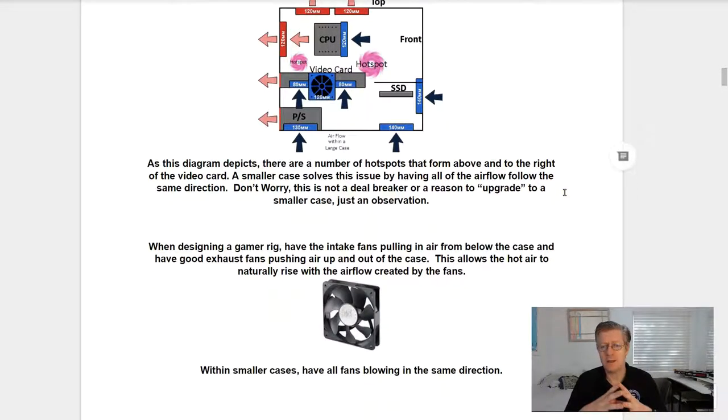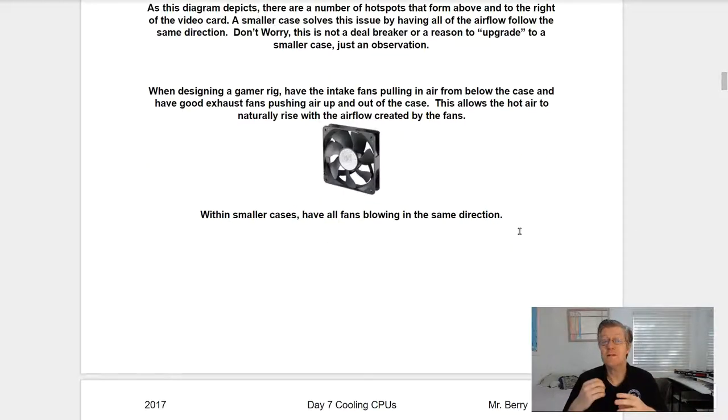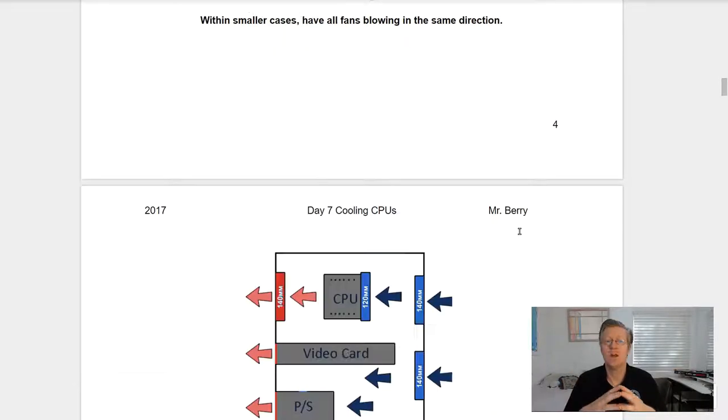So as this diagram depicts, there are a number of hot spots that form above and to the right of the video card. A smaller case solves this issue by having all the airflow flowing the same direction. Don't worry, this is not a deal breaker or a reason to upgrade to a smaller case, just an observation. When designing a gamer rig, have the intake fans pulling in air from below the case and have good exhaust fans pushing air up and out of the case. This allows the hot air to naturally rise with the airflow created by the fans. Within smaller cases, have all the fans blowing in the same direction.